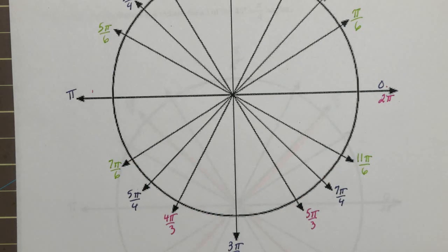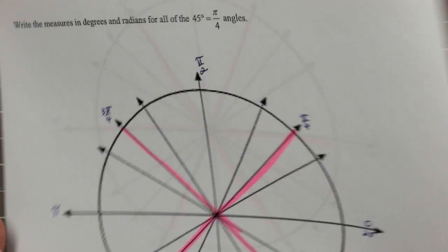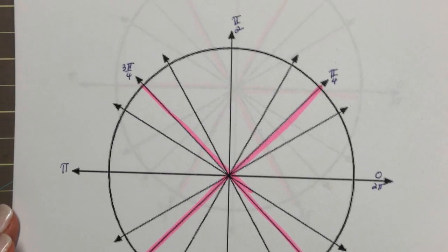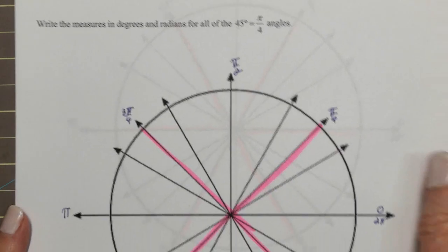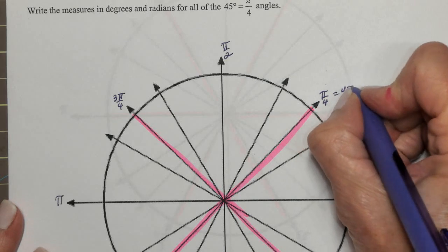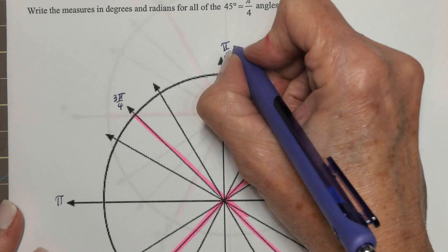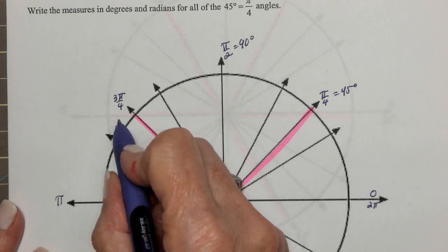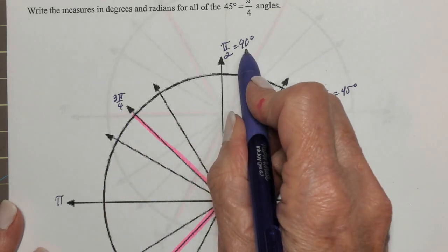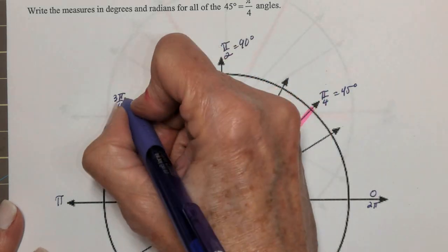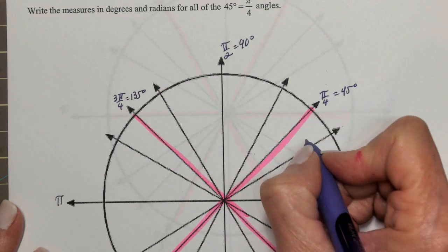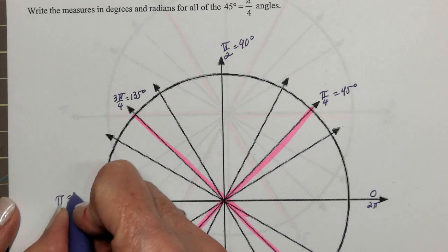That takes care of all of our radian measures. Now let's go back and do the same thing using degrees. Pi over 4 is 45 degrees. Pi over 2 is 90 degrees. 3 pi over 4 is 180 minus 45, which is 135 degrees. Pi is 180 degrees.